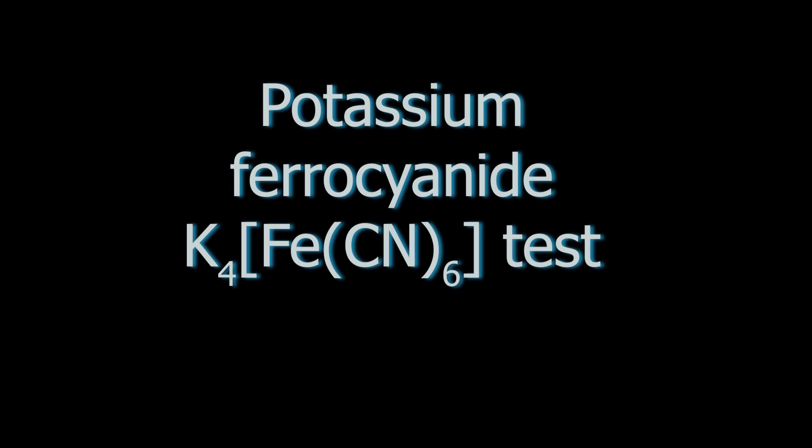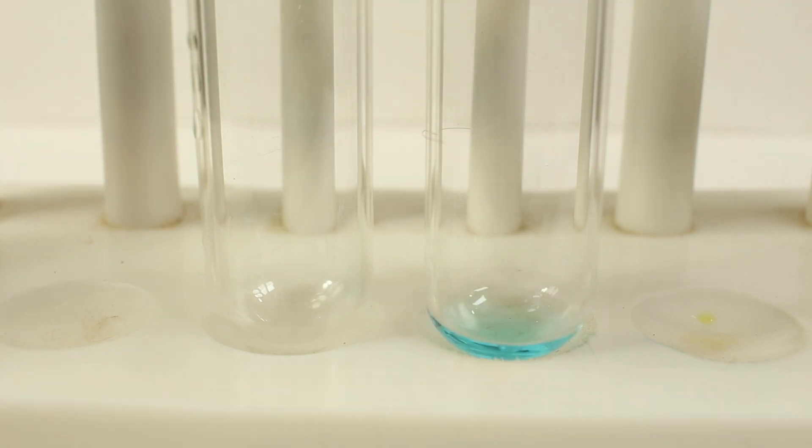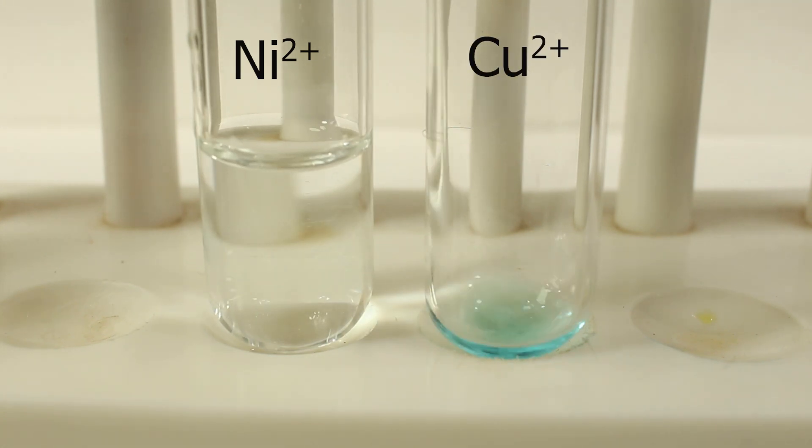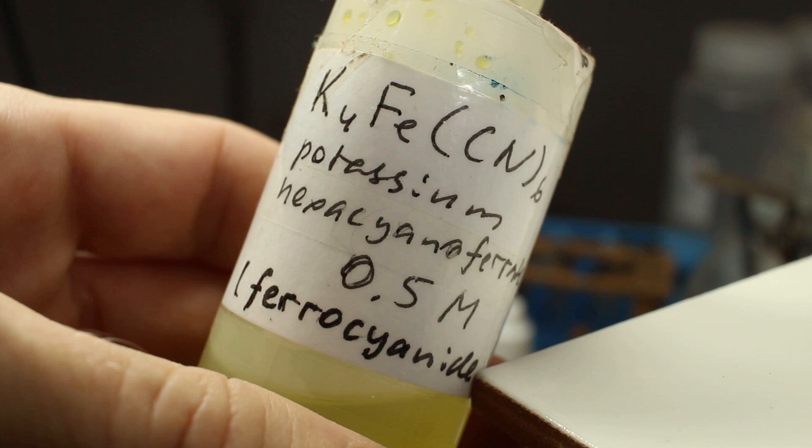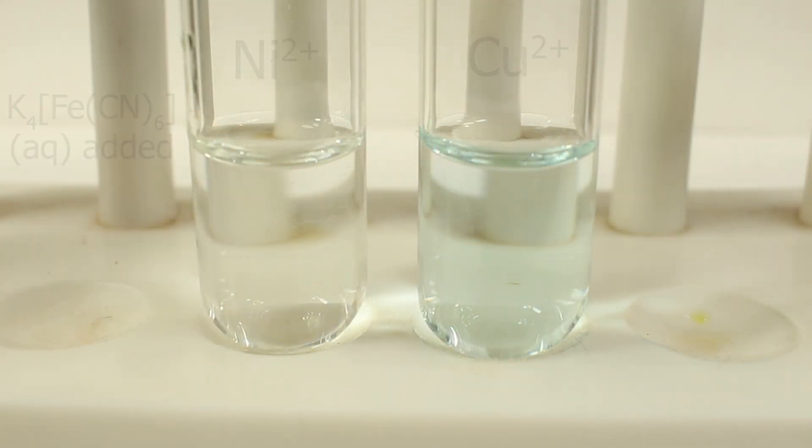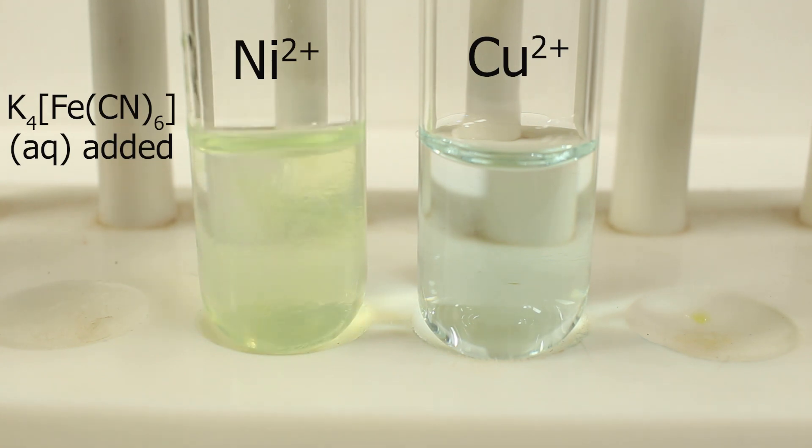Potassium ferrocyanide. Another complex formation. We use same pair: nickel-2-sulfate, copper-2-sulfate. And potassium ferrocyanide or potassium hexacyanoferrate II in IUPAC nomenclature. Our ions here to form complexes, iron II surrounded by six cyanide ions.